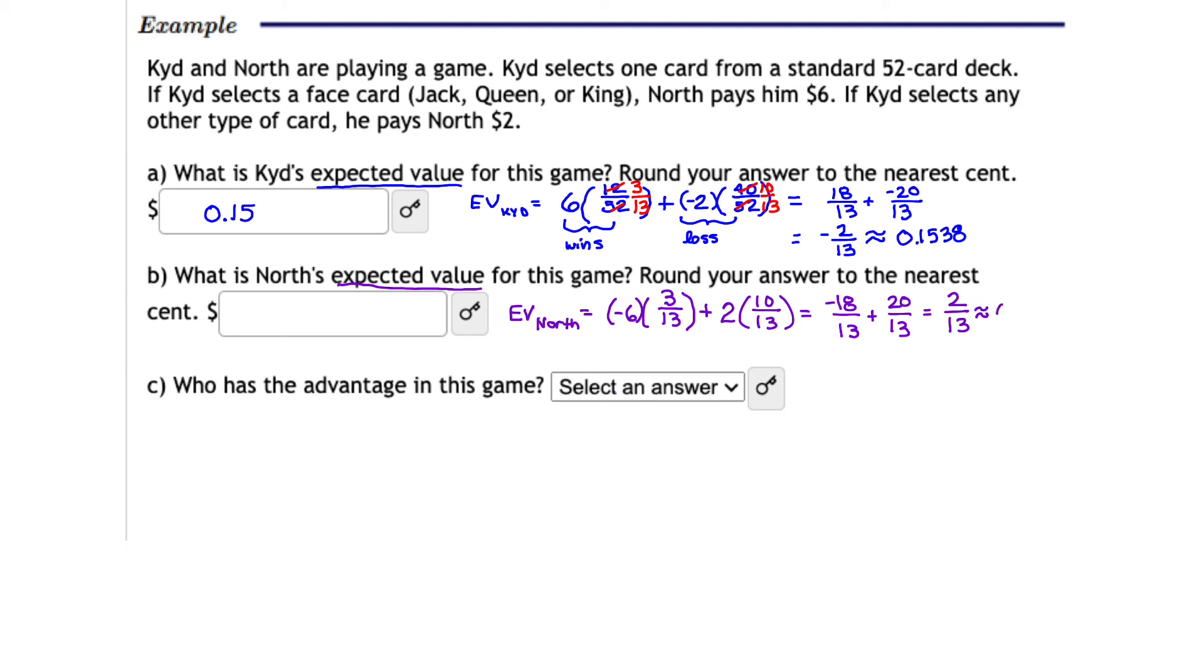And notice that is just the positive of the value that we obtained in A. And that makes sense because from North's perspective, he's winning whenever Kid is losing. And so that means that North's expected value is positive 0.15. And that brings me to something that I see I made a mistake. Up here, remember, from Kid's perspective, he's losing. So we need to make sure if he's losing that we designate that loss with a negative. So Kid's expected value is a negative 15 cents, whereas North's expected value is a positive 15 cents.